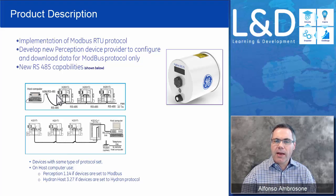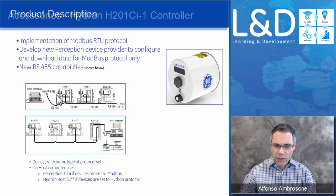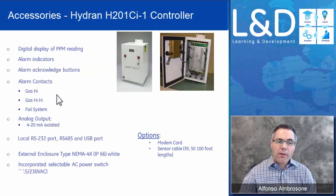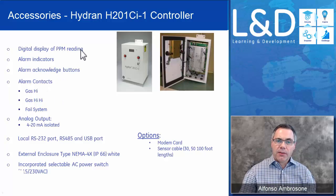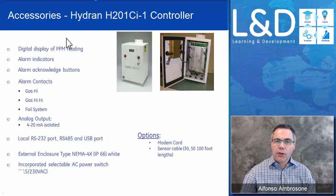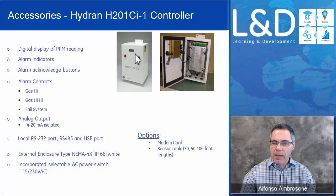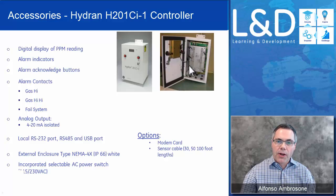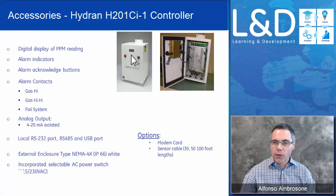We also have accessories for this equipment. We have two controllers. The CI1 controller is an extension of the Ti. If you have a Ti mounted on an upper filling valve where you can't easily see the display, you can bring the signal back to a CI1 controller and have a local display of the PPM. It also has alarm lights and all the relay and communication options, so you don't have to wire up the Ti directly. The only thing this box will not show on the display is the trend — it just shows the PPM level.